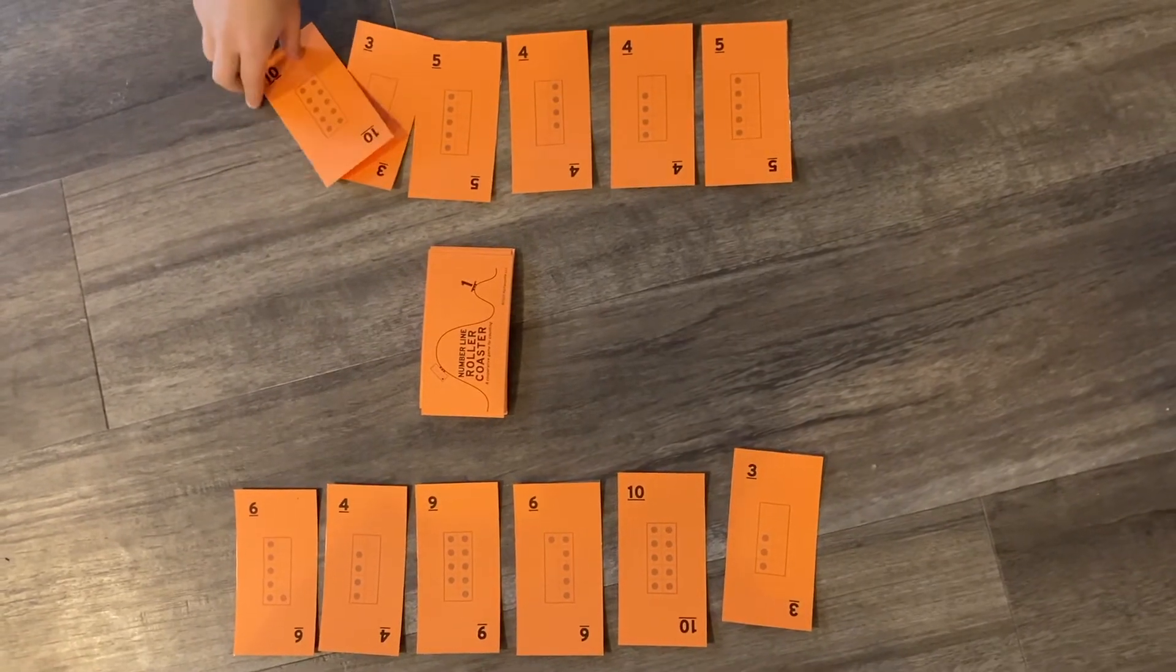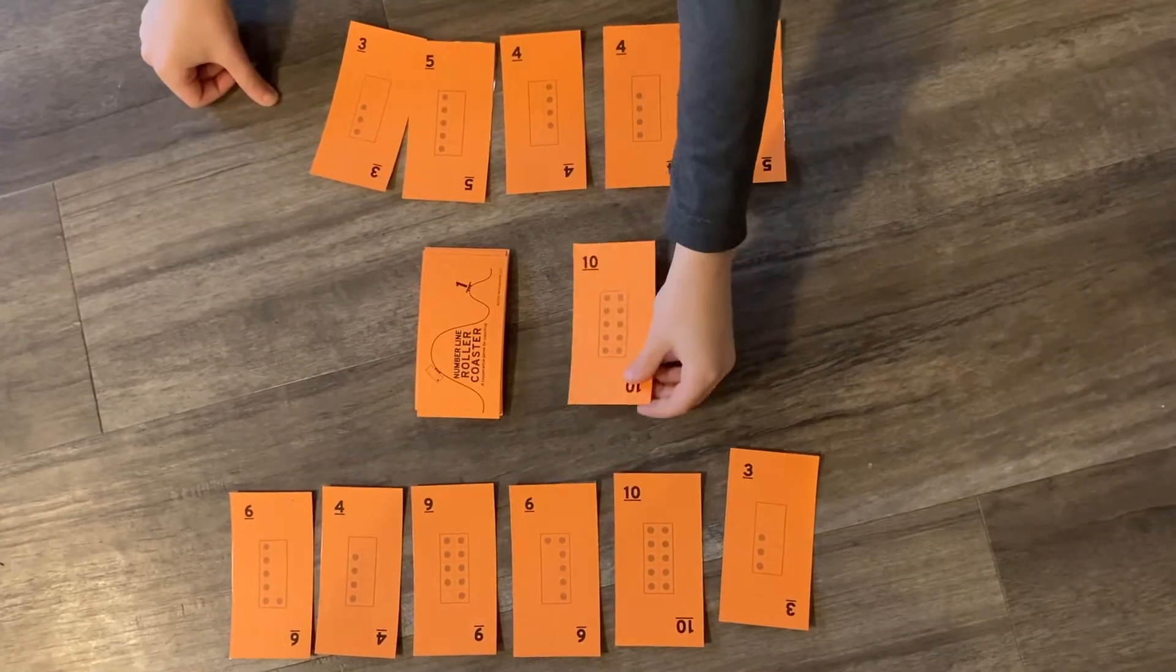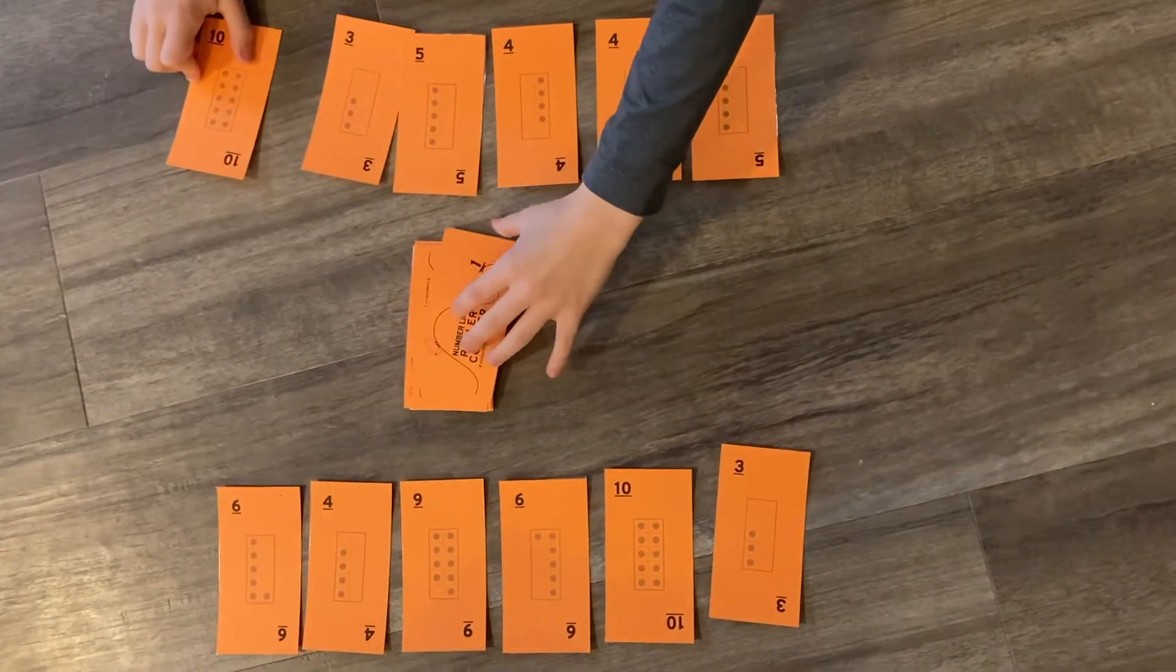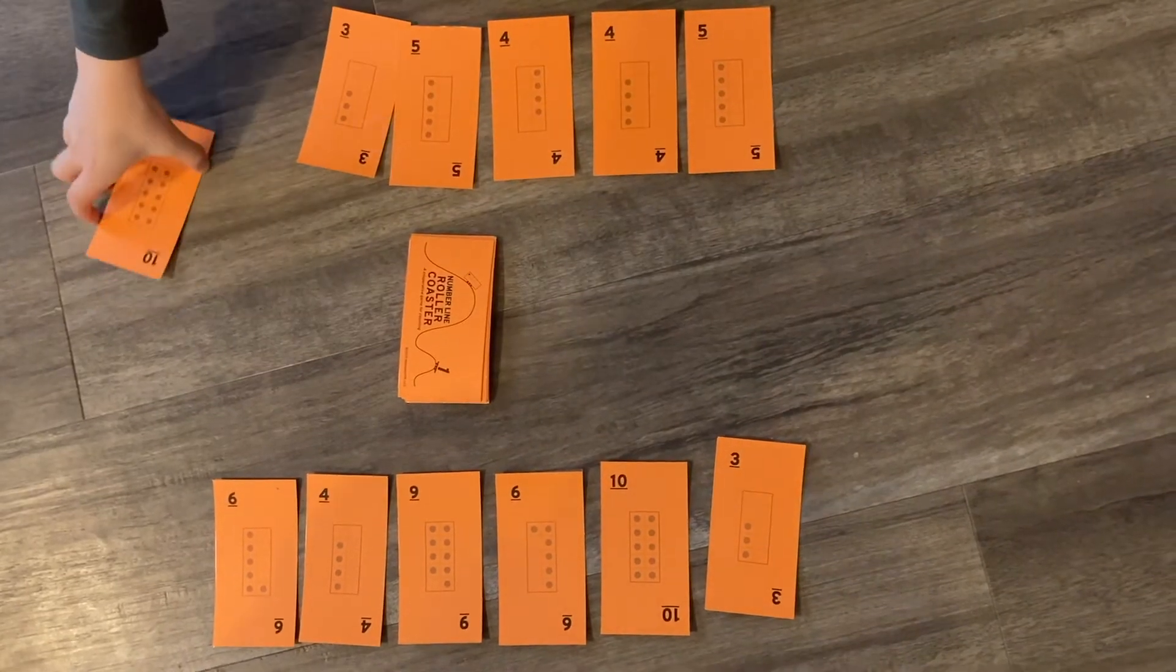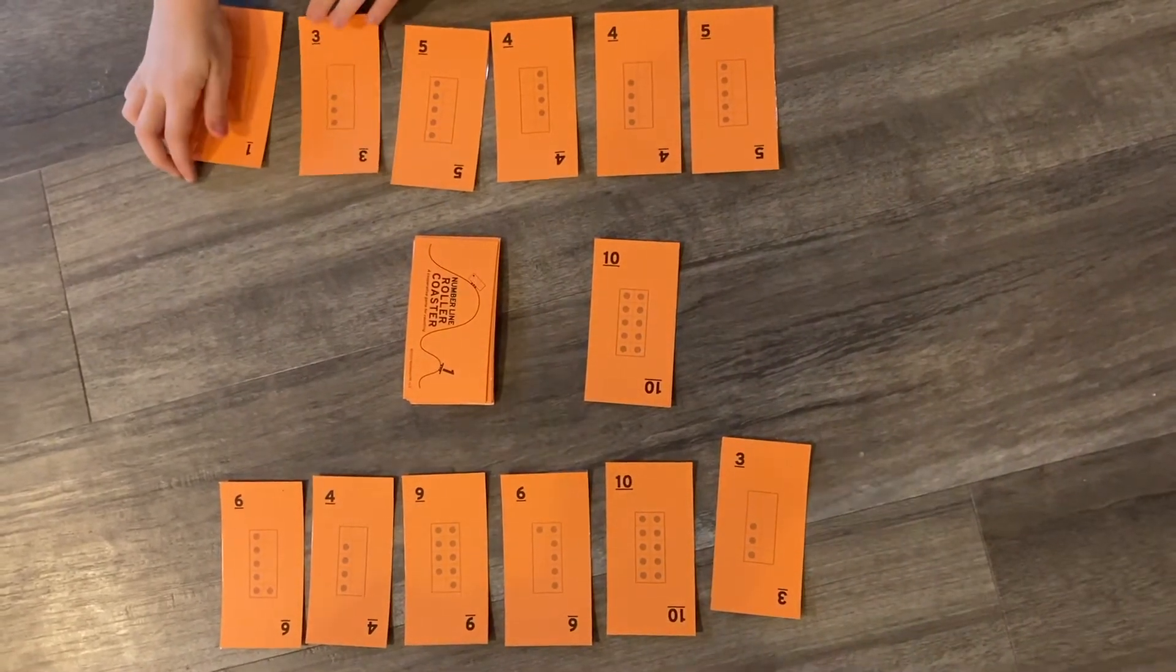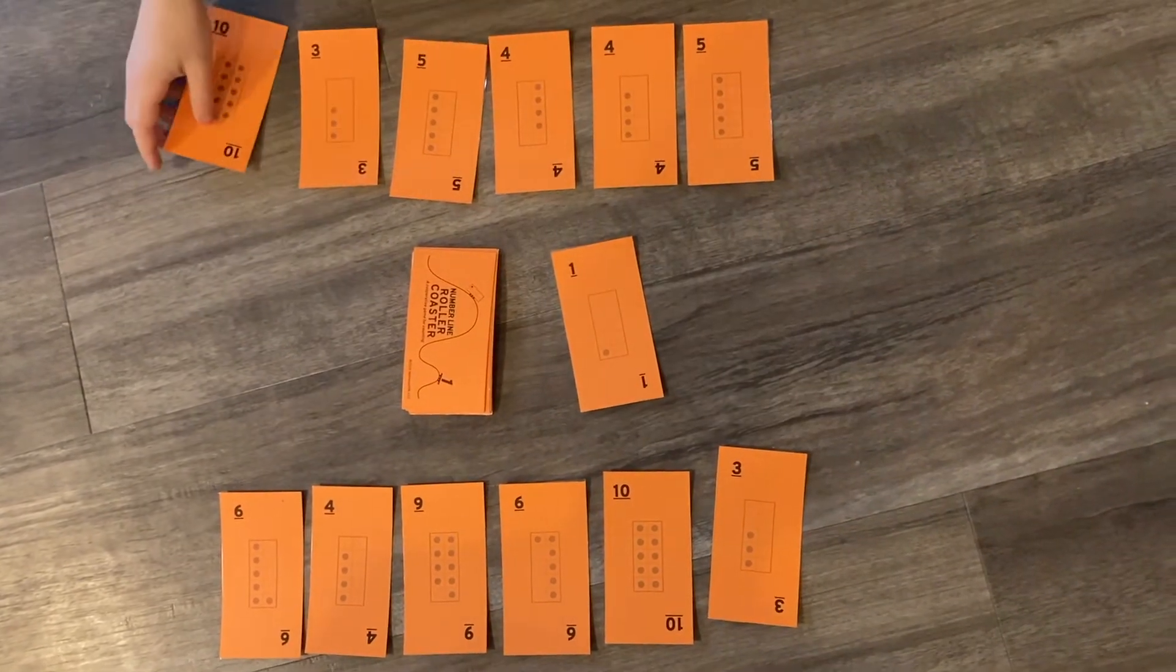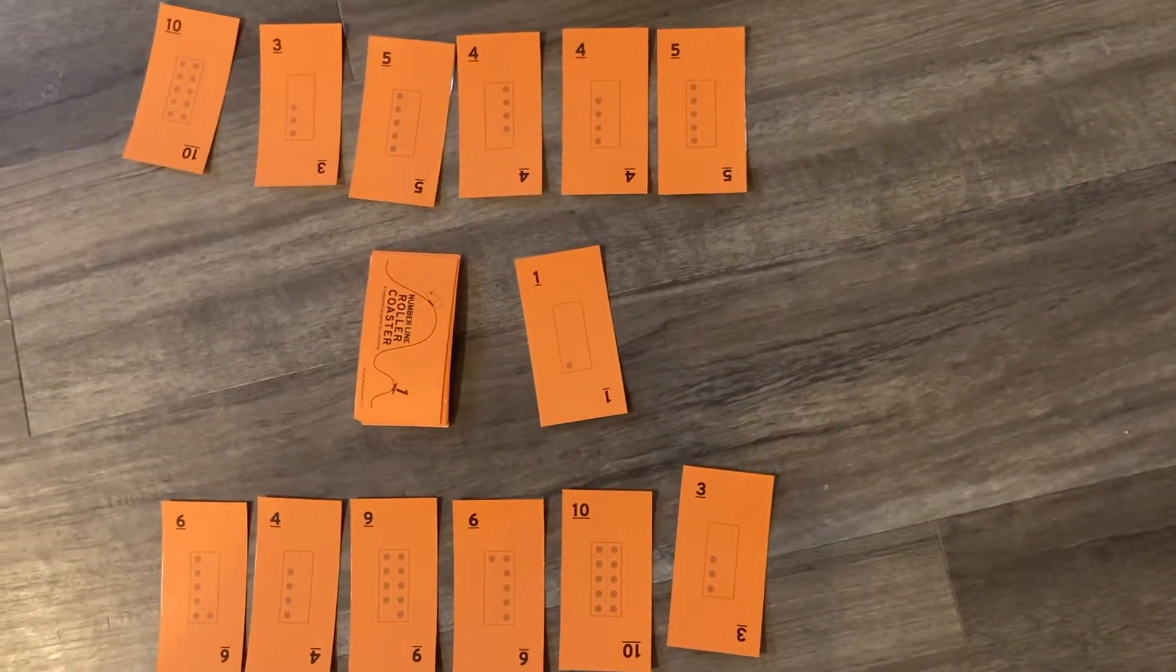So Clayton, will you start us off by turning over the center card? Here he goes. He's going to turn it over and put it right in the center. Will you just put that one right in the center? Just turn it over. There we go. So one is the card that gets turned over right in the center.